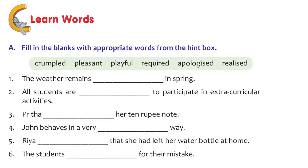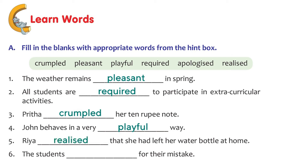Now let's look at similar words and fill in the blanks using appropriate words. 'The weather remains dash in spring' - the suitable word is pleasant. 'All students are dashed to participate in extra-curricular activities' - it's required. 'Preeta dash her 10 rupee note' - the word is crumbled. 'John behaves in a very dashed way' - playful. 'Rhea dashed that she had left her water bottle at home' - she realized. 'The students dashed for their mistake' - the students apologized.